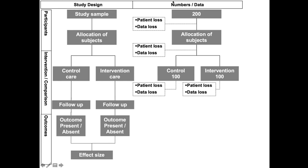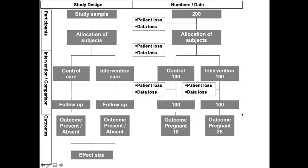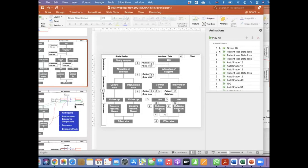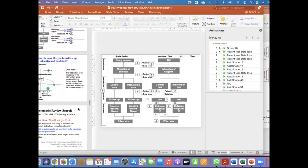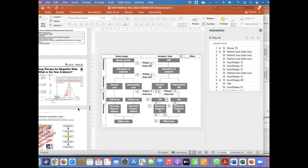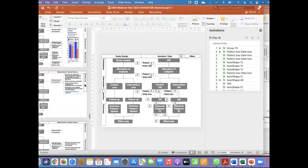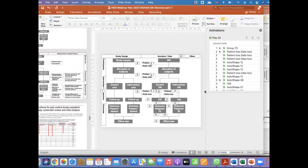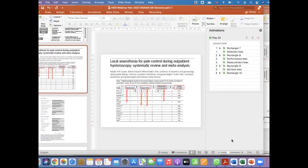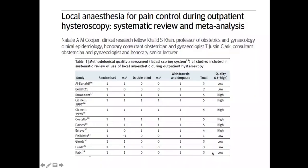The instructor checks whether the explanation makes sense and the student confirms it does. The instructor thanks the student for raising the question as it gave the opportunity to explain attrition bias once more, and invites any further questions, comments, or clarifications.